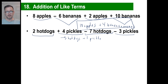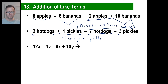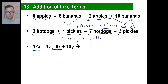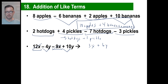Now, if you can figure out apples and bananas and hot dogs and pickles, then you can figure out this expression with 4 terms. Start at the left. There's an x — and there's another x. 12x minus 9x is 3x, done with that part. Now you have negative 4y and positive 10y. Negative 4 plus 10 is 6, so you have 6y. You can't say '9xy' — just like you can't have pickle dogs. This is as far as you go.